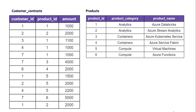We want customer IDs of those customers who have purchased at least one product from each product category listed in the products table. For customer ID 2: they purchased product ID 2 (Analytics) and product ID 5 (Compute), but customer ID 2 has not purchased any product from the Containers category, so this will also not appear in our output.